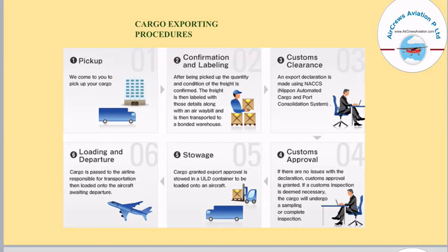After confirmation and labeling, the next procedure is customs clearance. An export declaration is made using NACCS, that is the NACCS Automated Cargo and Port Consolidation System. After customs clearance, the next procedure is customs approval. If there are no issues with the declaration, customs approval is granted. If a customs inspection is deemed necessary, the cargo will undergo a sampling or complete inspection.